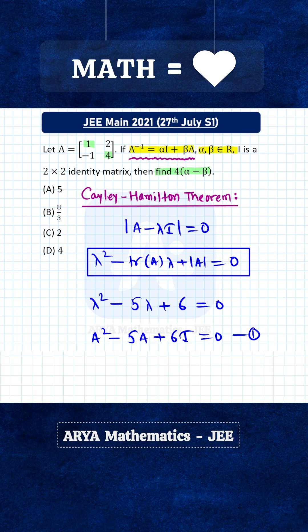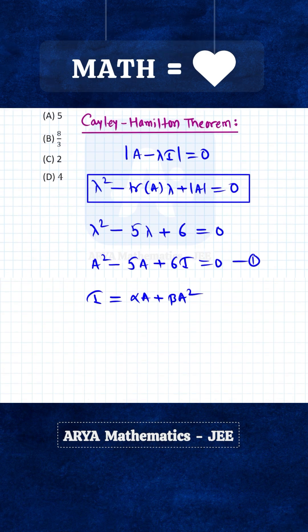Multiplying this equation with A, A·A⁻¹ equals I, and on the right side we get αA + βA². We can rewrite this as βA² + αA - I = 0.